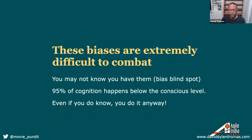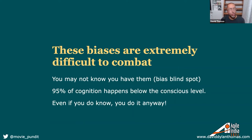These biases are pretty tough to fight. Part of the problem is you may not even realize you have bias — there's literally a bias blind spot where you think you don't have any biases, but you're sure that everybody else does. About 95% of cognition is happening below the threshold of conscious thought, so you're making these decisions so quickly you don't even realize you've made them. Even if you know about the bias, you'll probably still do it anyway.